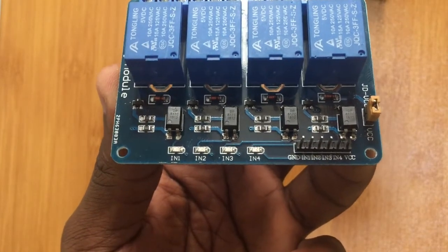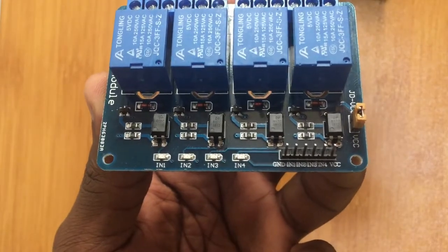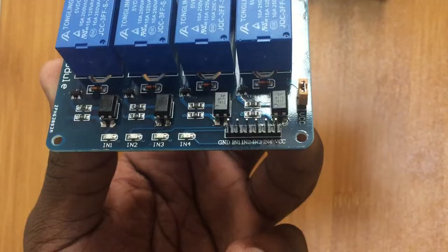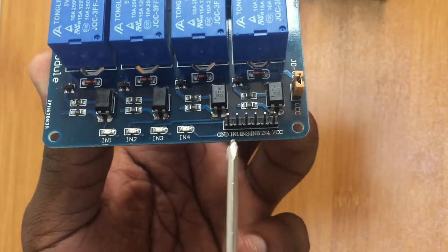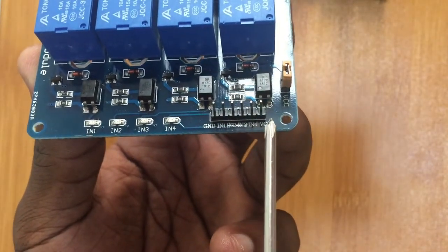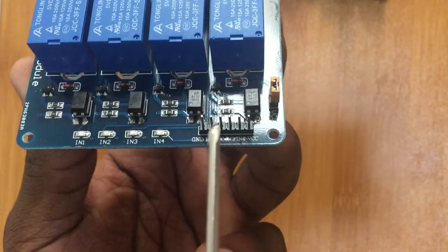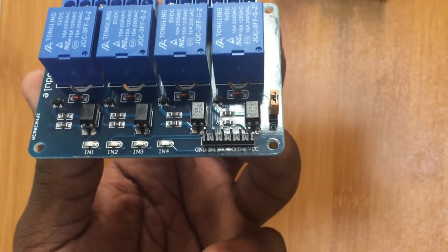These are the terminals for connecting the inputs: we have the ground, this is the VCC, inputs one, two, three, and four, and these ones are connected to the Arduino board.